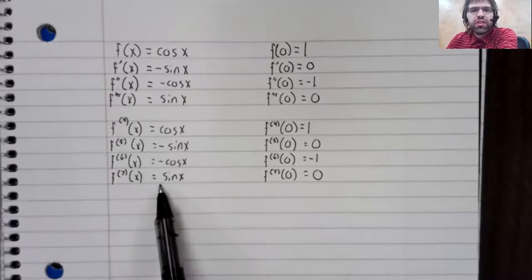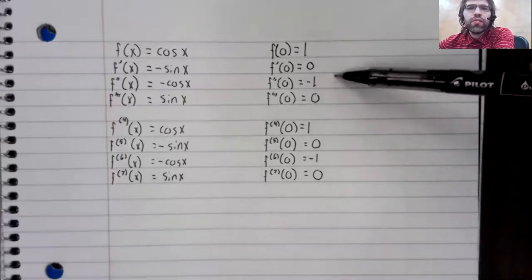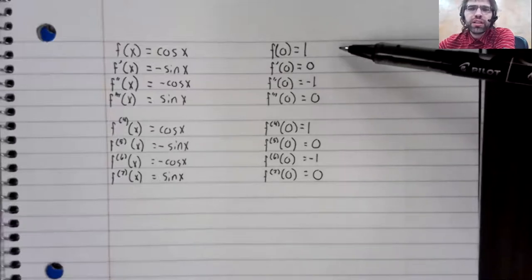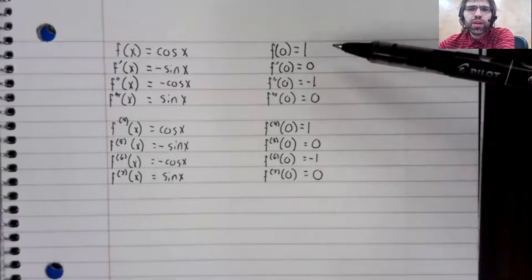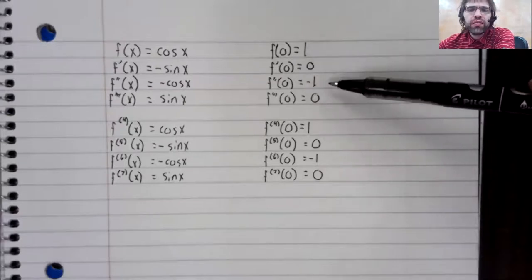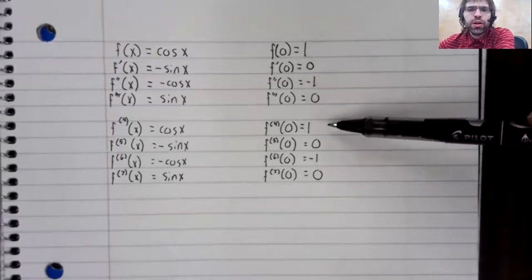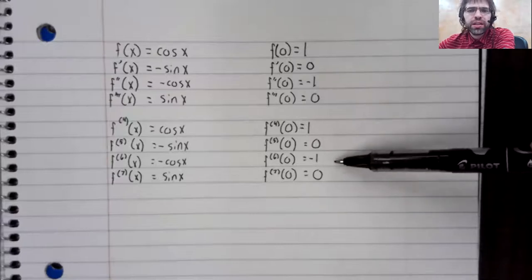Because of that, the coefficients of the McClurin series repeat as well. One, zero, negative one, zero, one, zero, negative one, zero.